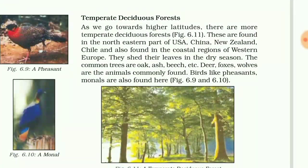As we go towards higher latitudes, there are more temperate deciduous forests. These are found in the north eastern part of the USA, China, New Zealand, Chile, and also in the coastal regions of western Europe. They shed their leaves in the dry season. The common trees are oak, ash, and beech.